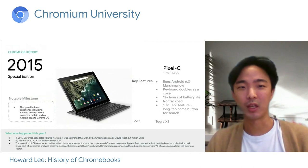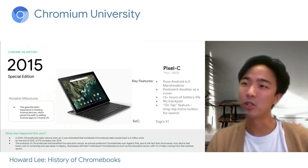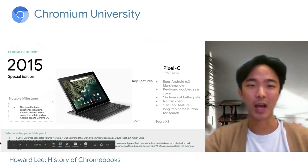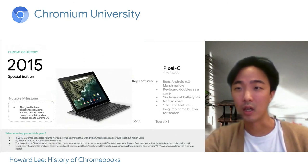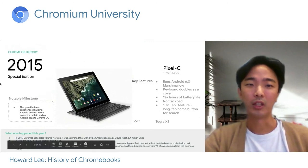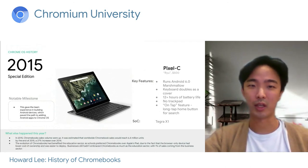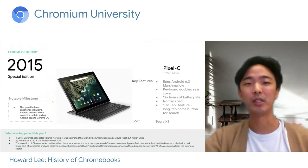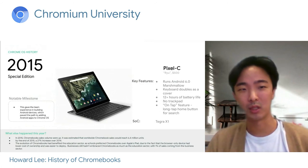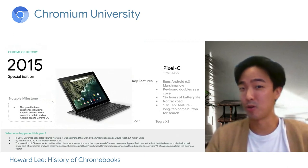With an octa-core NVIDIA SoC, the Pixel C shipped with Android 6.0.1 Marshmallow. This tablet could attach to a keyboard magnetically via a hinge, as you can see in this image, and the keyboard connected via Bluetooth. It had cool features like an on-tap feature where a long tap of the home button would trigger search. This collaboration with the Android team helped familiarize the Chrome OS team with the Android ecosystem, and paved the way for some really interesting development in the next few years — like Android apps coming to Chrome OS.